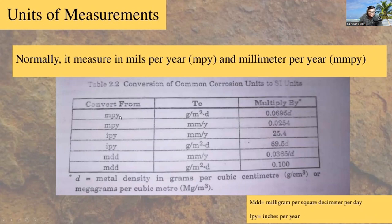When we convert from mils per year to gram per meter square per day times D, where D indicates the metal density in grams per cubic centimeter or megagrams per cubic meter, it should be multiplied by 0.0696 times D.